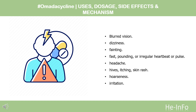Serious side effects of omadacycline include: blurred vision, dizziness, fainting, fast, pounding, or irregular heartbeat or pulse, headache, hives, itching, skin rash, hoarseness, and irritation.